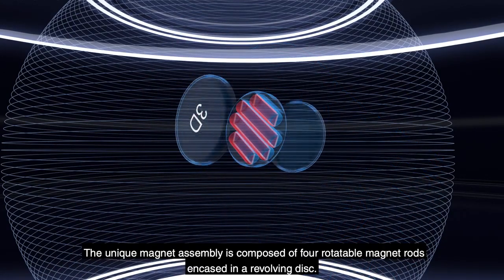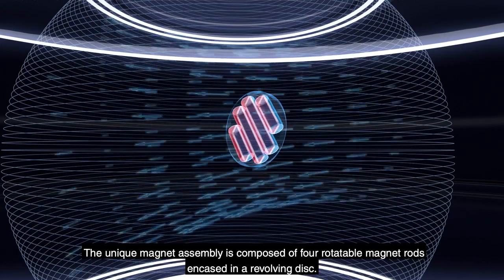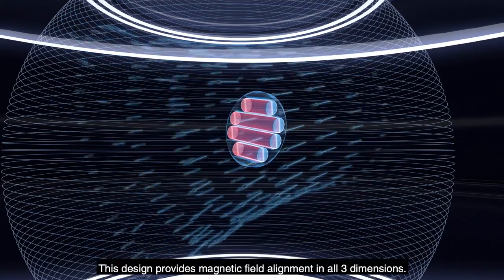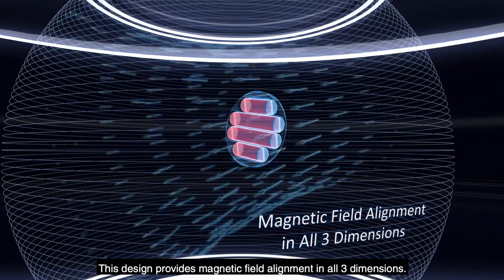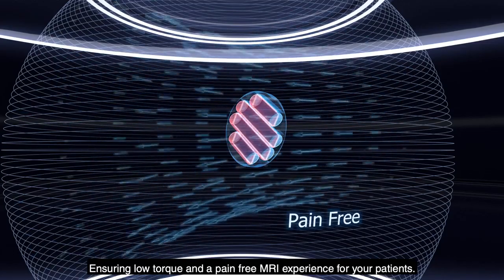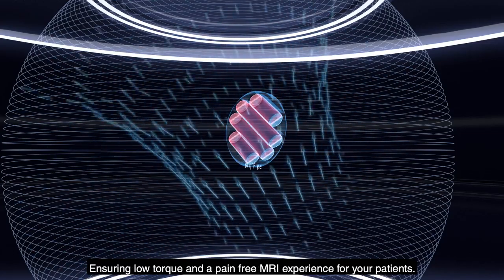The unique magnet assembly is composed of four rotatable magnet rods encased in a revolving disc. This design provides magnetic field alignment in all three dimensions, ensuring low torque and a pain-free MRI experience for your patients.